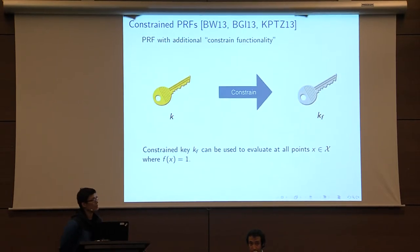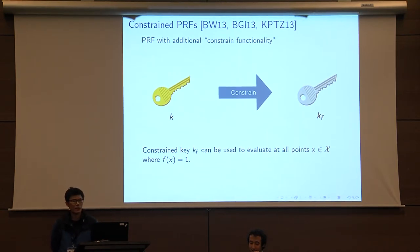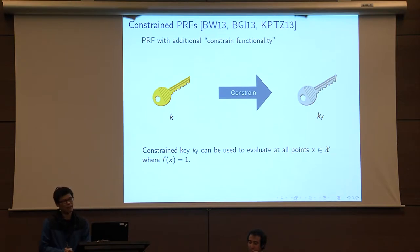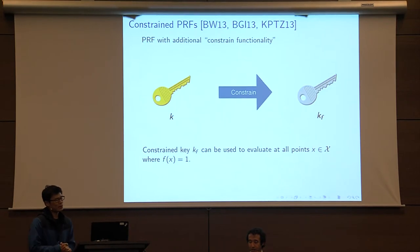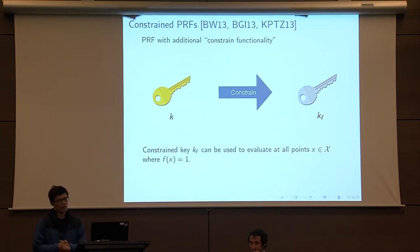Recently, three independent works — Bonet-Waters '13, Boyle et al. '13, and Caius et al. '13 — introduced the notion of constraint PRFs. Constraint PRFs are just like regular PRFs but with an additional algorithm called the constraint algorithm. This algorithm takes in a regular PRF key k and a constraint predicate f, and generates another PRF key k_f, called a constraint key. This constraint key can be used to evaluate the PRF at all points x in the domain where f(x) equals one — so it's a more restricted key that can only evaluate the PRF on a subset of the domain.